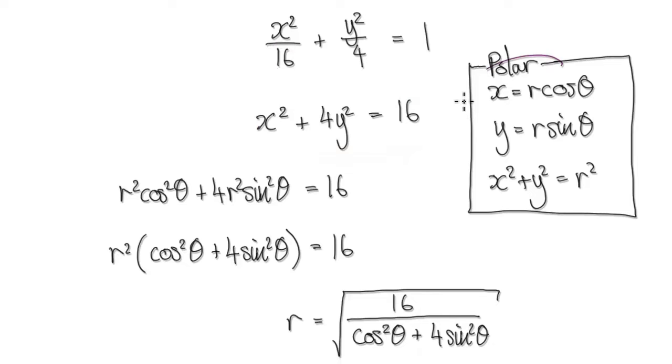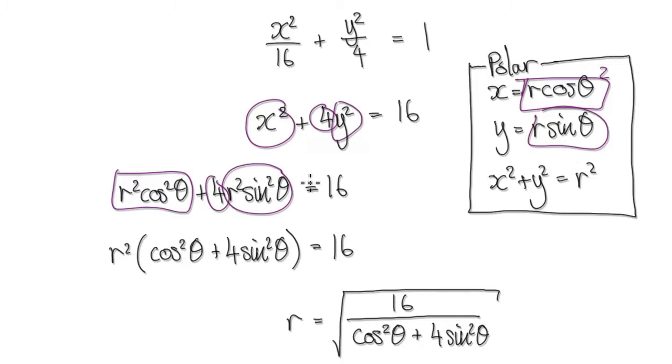So in polar form, x squared would be this thing squared which would then give us this and then 4, and then y squared would be this thing here equals 16.